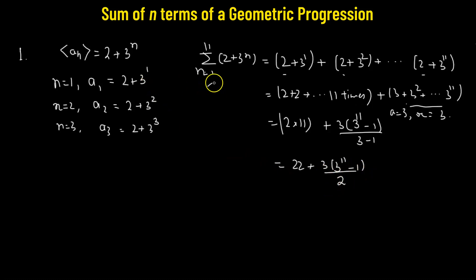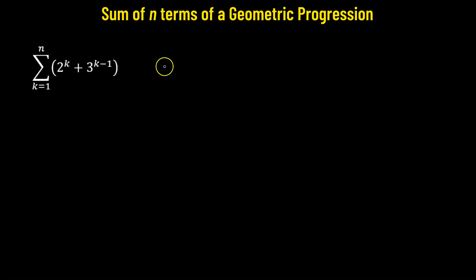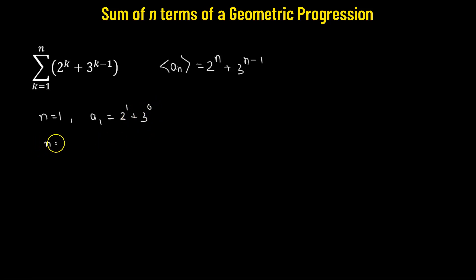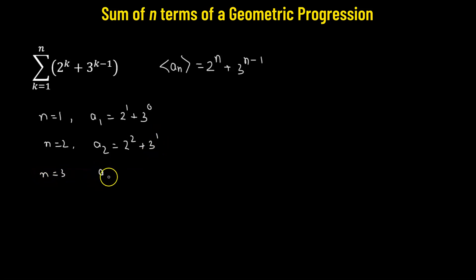Let's go to number 2. The sequence is given by 2 raised to the power of n plus 3 raised to the power of n minus 1. For n equals 1, the first term a1 is 2 raised to the power of 1 plus 3 raised to the power of 1 minus 1, which equals 0. For n equals 2, a2 is 2 squared plus 3 to the power of 2 minus 1, giving 1. The third term a3 is 2 cubed plus 3 cubed minus 1, giving 2.